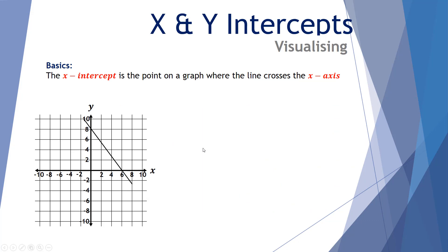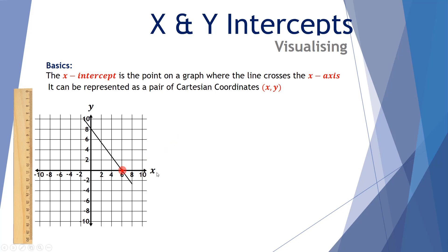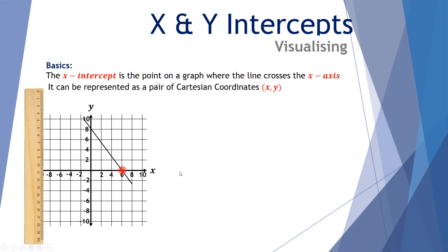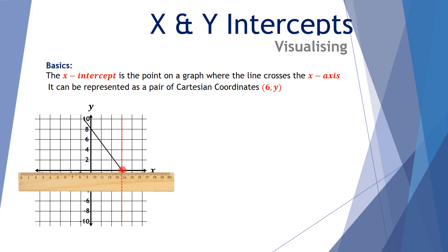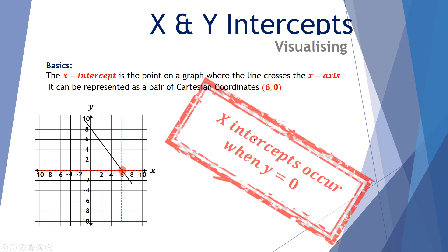The x-intercept is the point on a graph where the line crosses the x-axis. So here's our x-axis and here's our x-intercept. If we consider a pair of Cartesian coordinates, this particular point on the x-intercept represents an x value of 6 and a y value of 0. So this x-intercept has Cartesian coordinates of (6, 0). Note the x-intercept occurs when y equals 0 — it's always going to happen on the x-axis, which means the y value is always going to be 0.